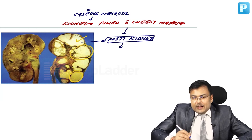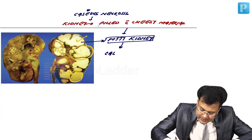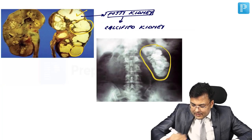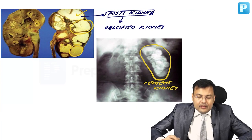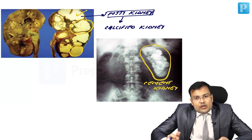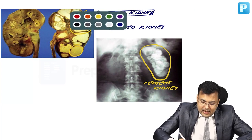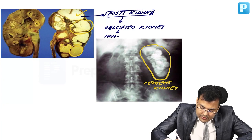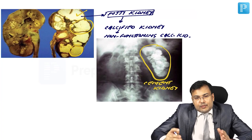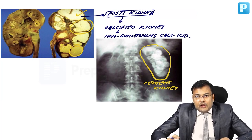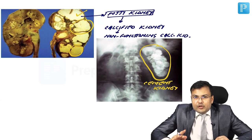The calcified kidney — cement kidney — becomes non-functioning. This process of a calcified, non-functioning kidney is known as auto-nephrectomy. Auto-nephrectomy is seen in genitourinary tuberculosis, just as autosplenectomy is seen in sickle cell anemia.